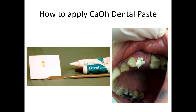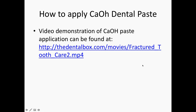Next, I want to briefly describe how one would apply calcium hydroxide dental paste. First, ensure that the tooth is dry and appropriate analgesia is provided for the patient. Equal parts of the calcium hydroxide base are mixed with the catalyst on a mixing board and spatula, as seen in this picture here. The calcium hydroxide paste is then added to the coronal surface of the fractured tooth, providing appropriate coverage to all of the exposed dentin and pulp. Here we have an example of one performed in our emergency department by myself. If you would like further instructions on how to apply calcium hydroxide dental paste, I would suggest going to the link seen in this video. It can be found at thedentalbox.com/movies, then look for fractured tooth care.